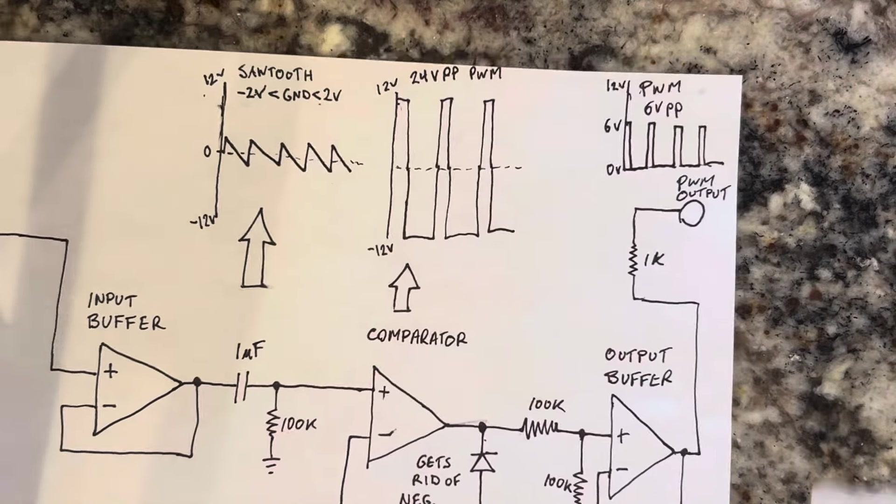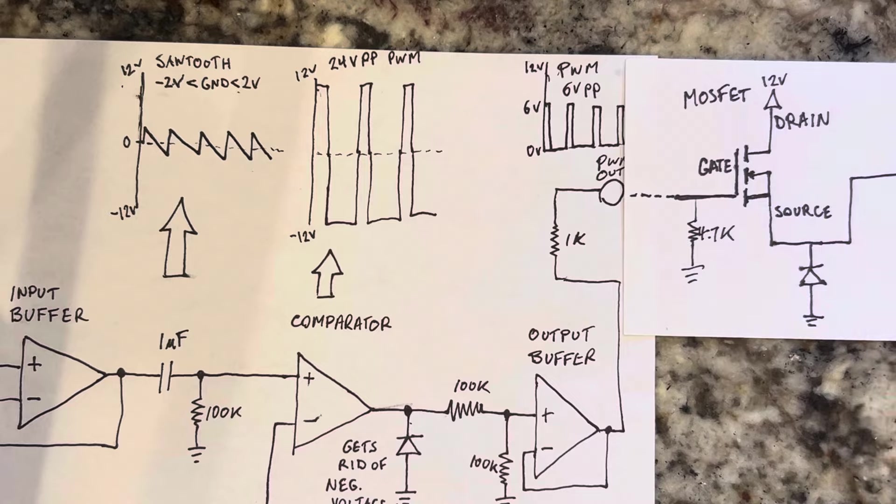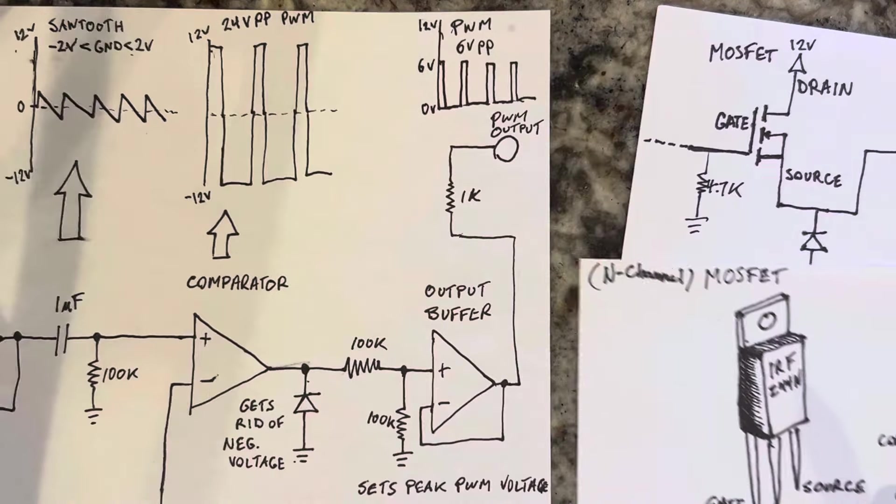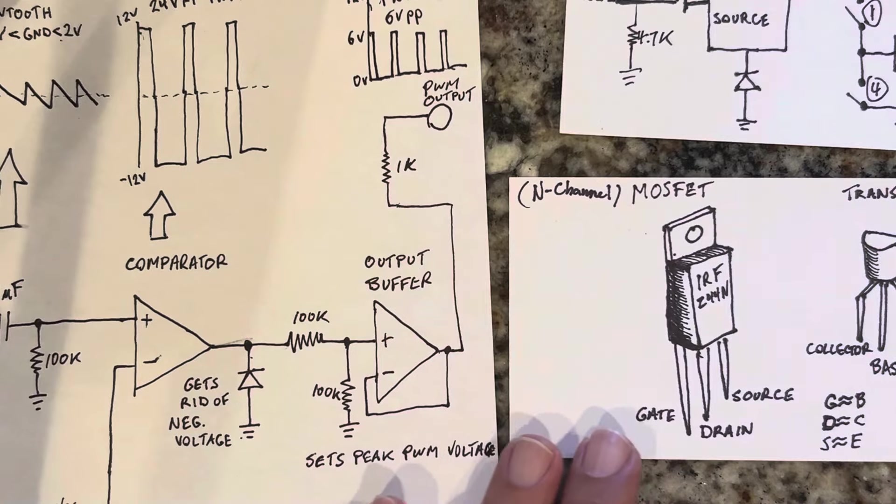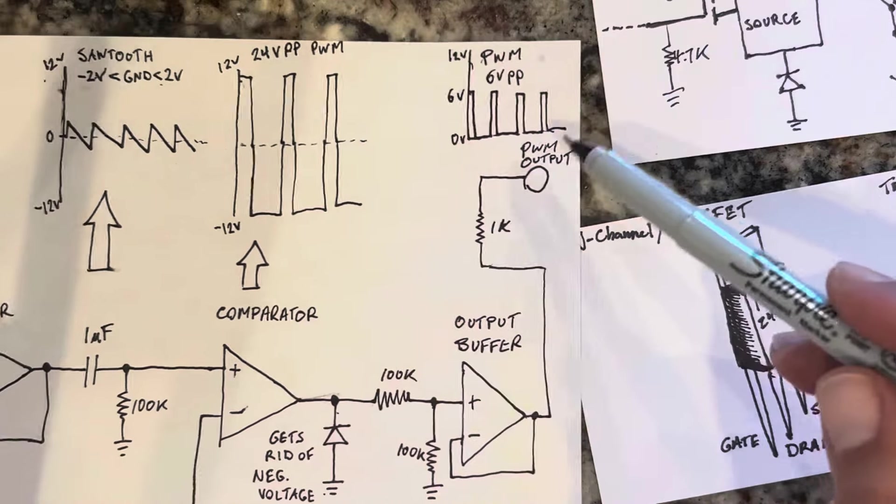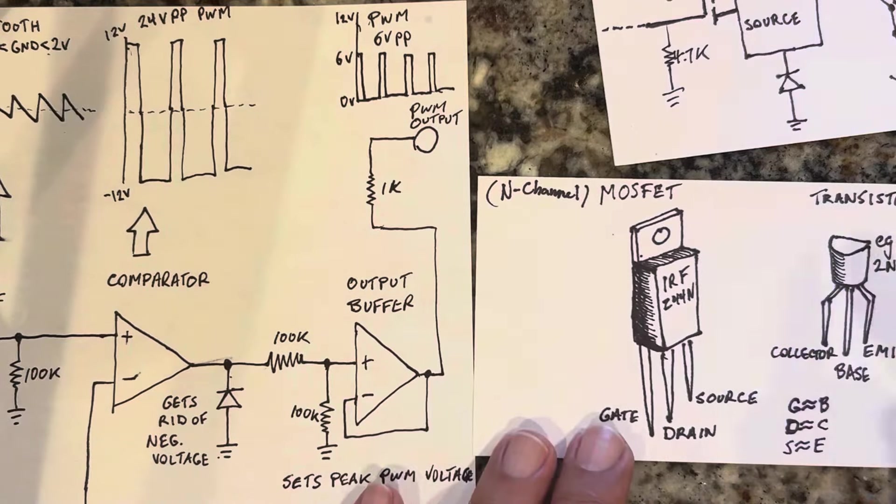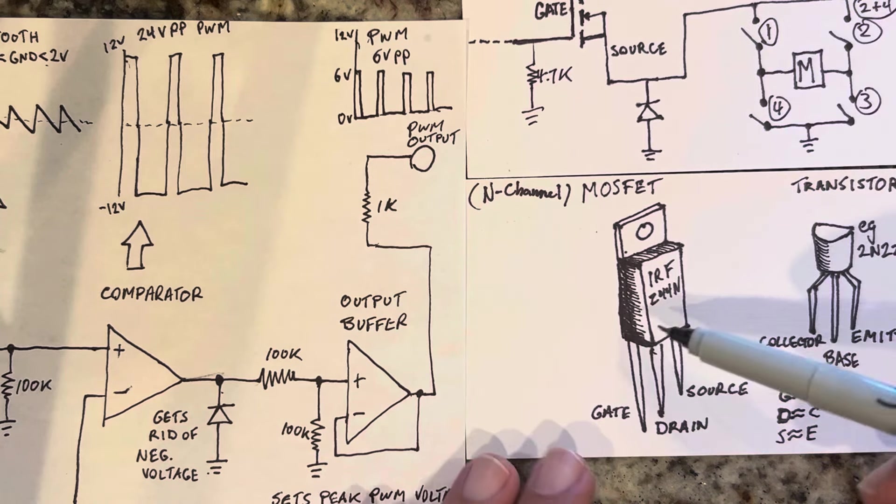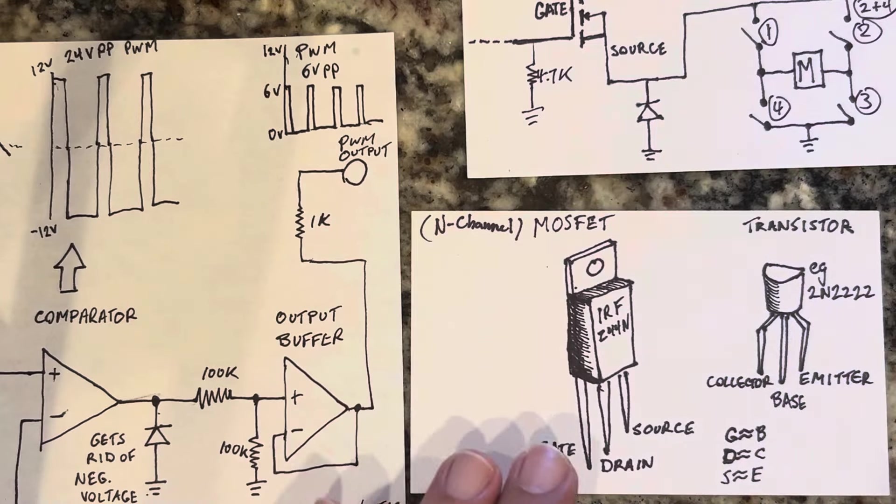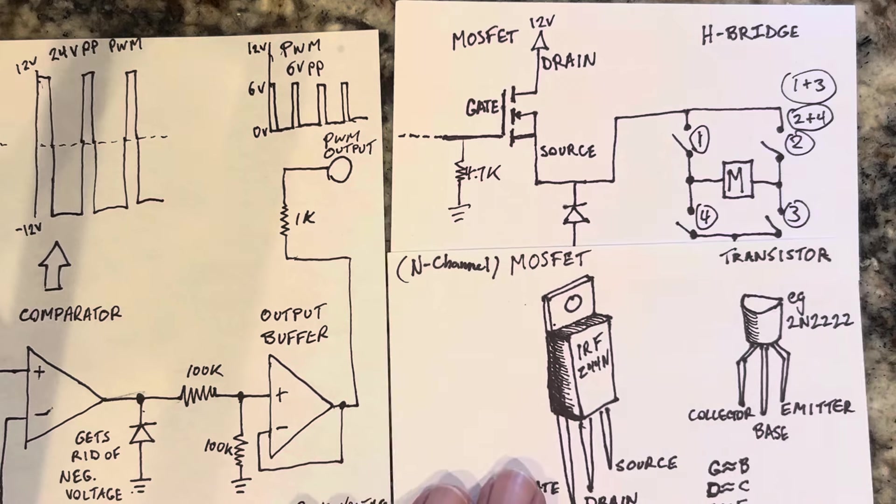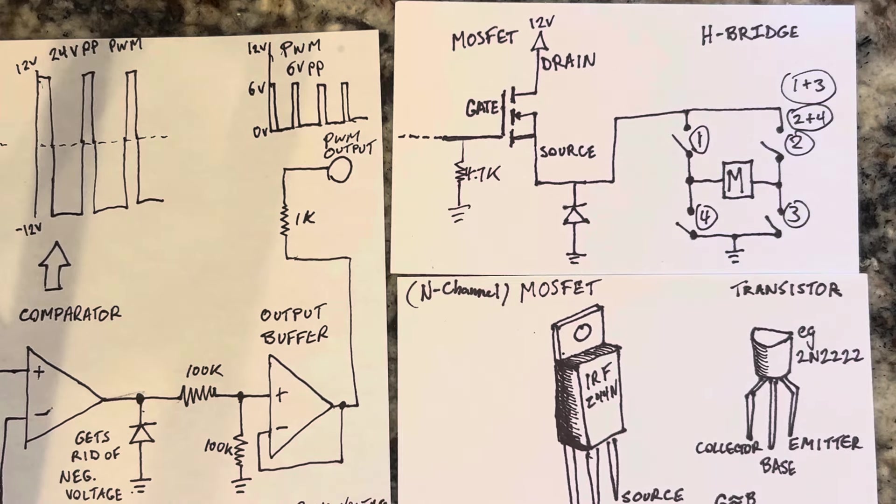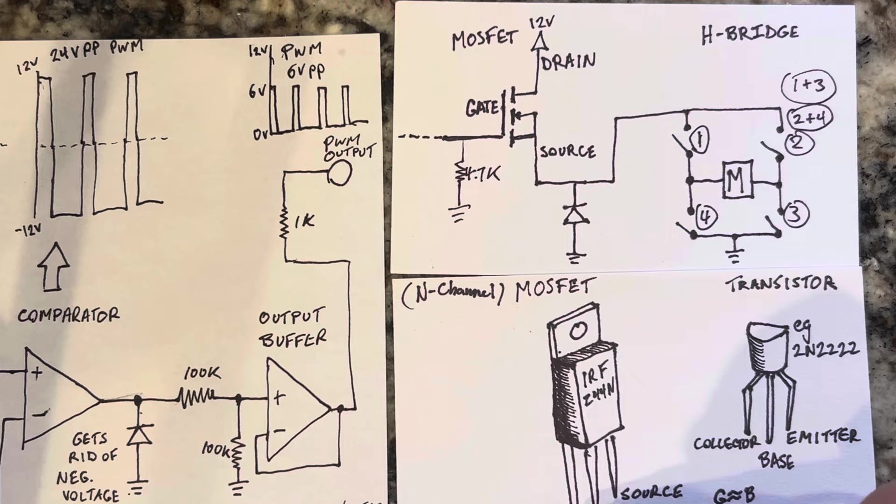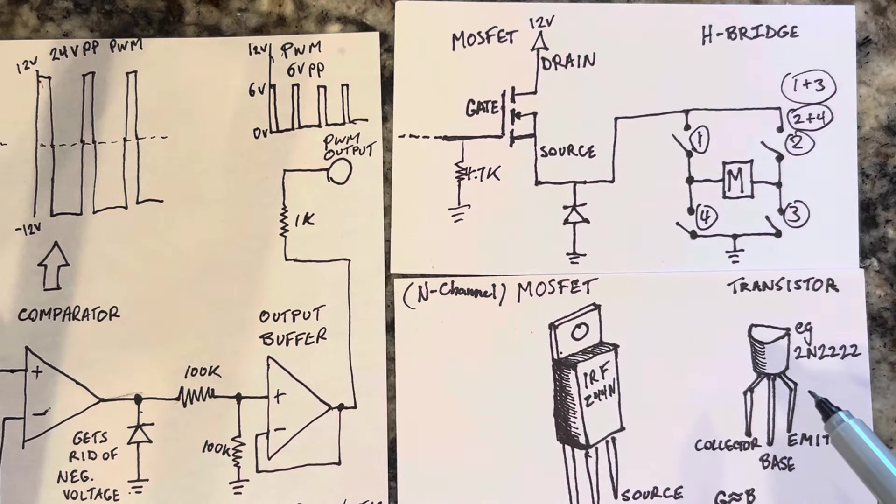The MOSFET is, once again, a voltage controlled device that acts as a switch, and it's a very fast switch. So if you have this frequency of this PWM signal really high, it will respond very quickly, especially like the current MOSFETs. The MOSFET I used is an IRF-Z44N, which is kind of a popular general purpose MOSFET.